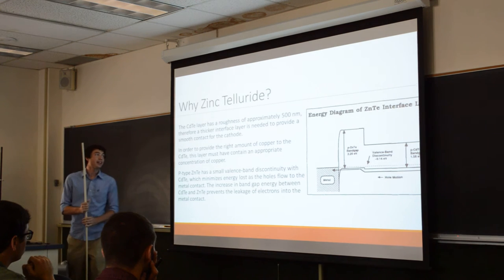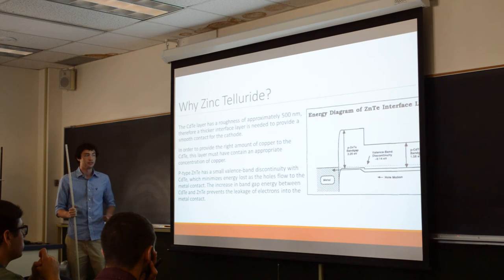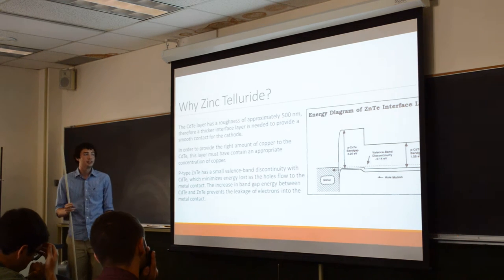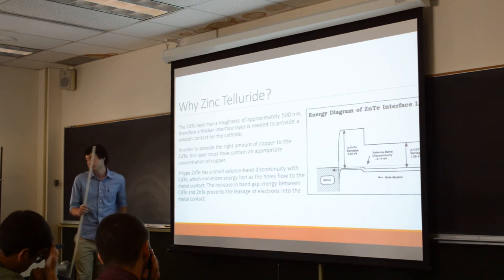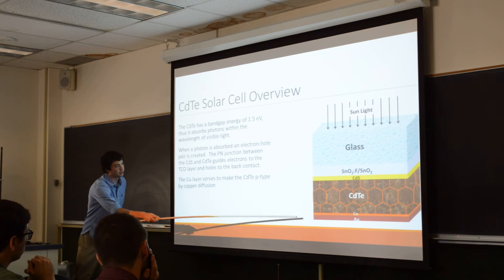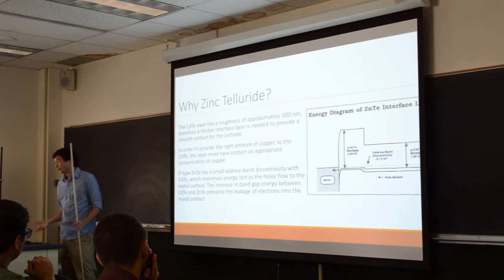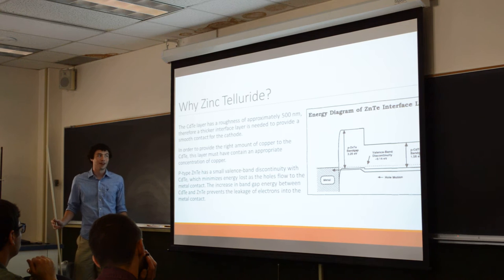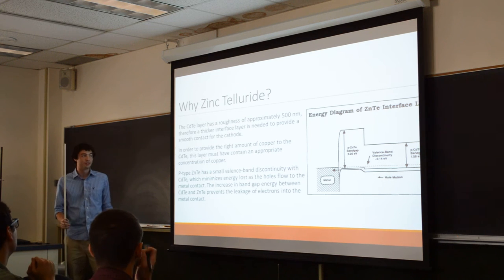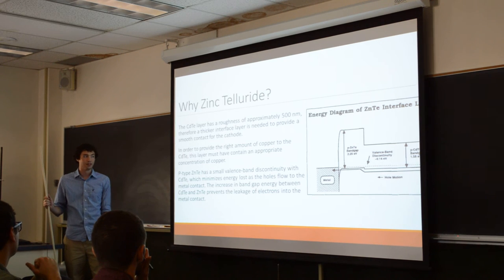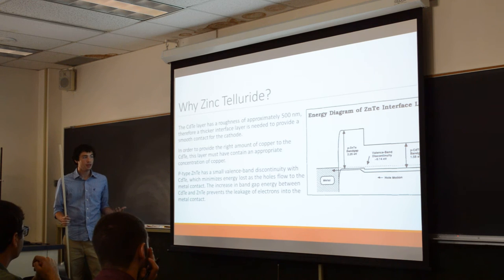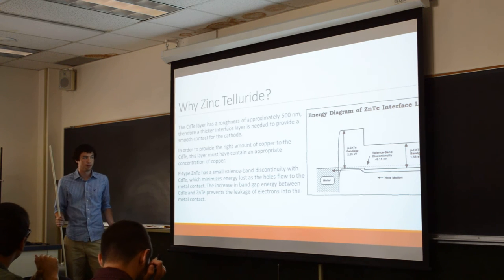The problem is that cadmium telluride is very rough — it has a roughness of approximately 500 nanometers, and that copper layer is only 4 nanometers thick. So if we wanted a smooth contact between the cadmium telluride and the gold, we would need a much thicker layer in between the two. Simply making a 200 nanometer thick layer of copper would over-dope the cadmium telluride, creating an alloy between cadmium telluride and copper rather than a doped layer. So we don't want that. Instead, we have to take some other material and dope it with a small amount of copper so that we can have a much thicker layer.